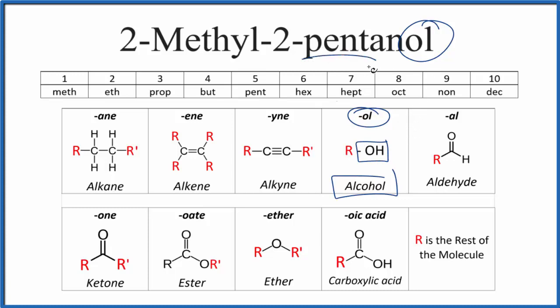The pent tells us we have five carbons, a chain of five carbons. And on the second carbon, that's where that OH is, that alcohol.